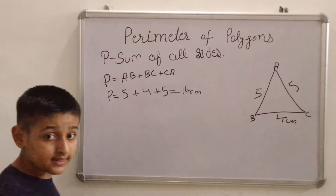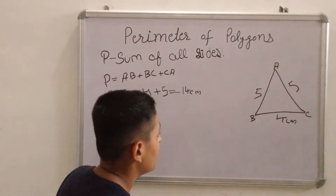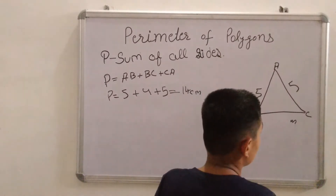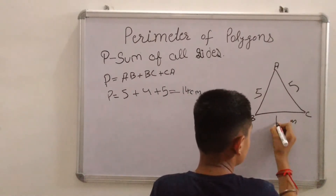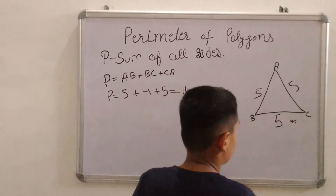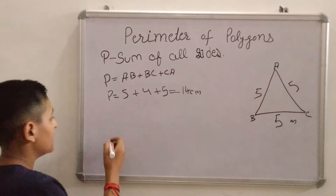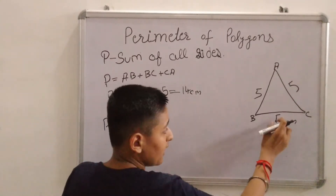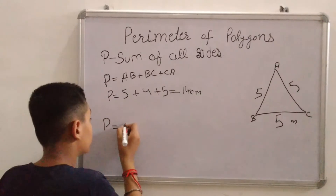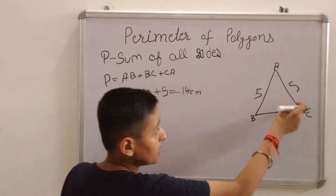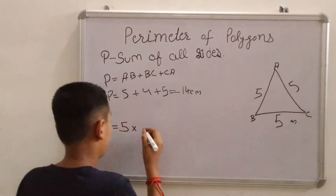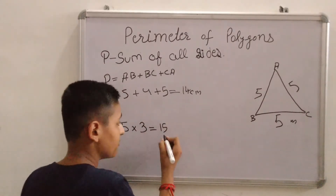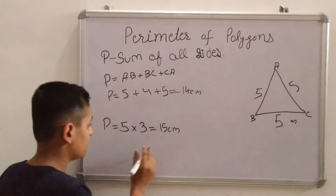There is another shortcut method. Let's assume the length of BC is now 5 cm, so all the sides are equal. There is another method: length of one side, which is 5 cm, multiplied by the number of sides of a triangle, which is 3.